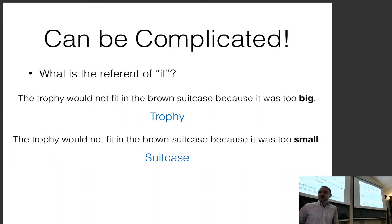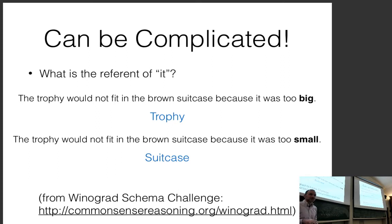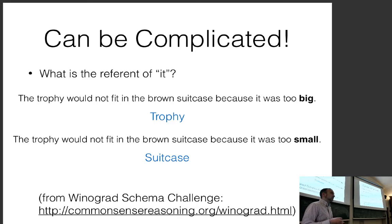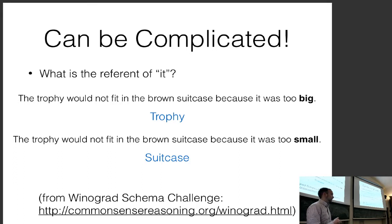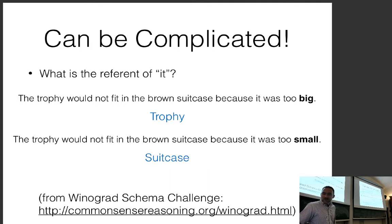The Winograd schema is an example of whether a model can understand semantics. You need to know that when you fit something in something else, the thing being fitted needs to be smaller. There's also a Winograd schema challenge where you can see how people are doing on this.